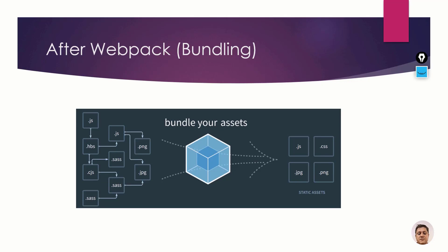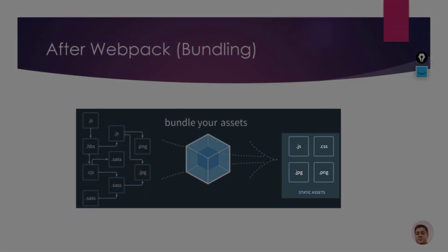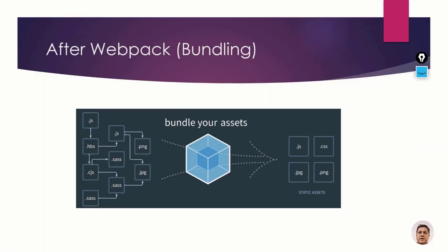So all the JS files, PNG files, JPG files, images, SASS files, CSS files — whatever — are all converted into static assets. In this example I'm showing four types: JS, CSS, JPG, and PNG. These static assets are created by webpack and placed inside a dist (distribution) folder. Webpack handles this automatically internally, and we also need to take care of CI/CD pipelines, where we put the files so that they will be served.